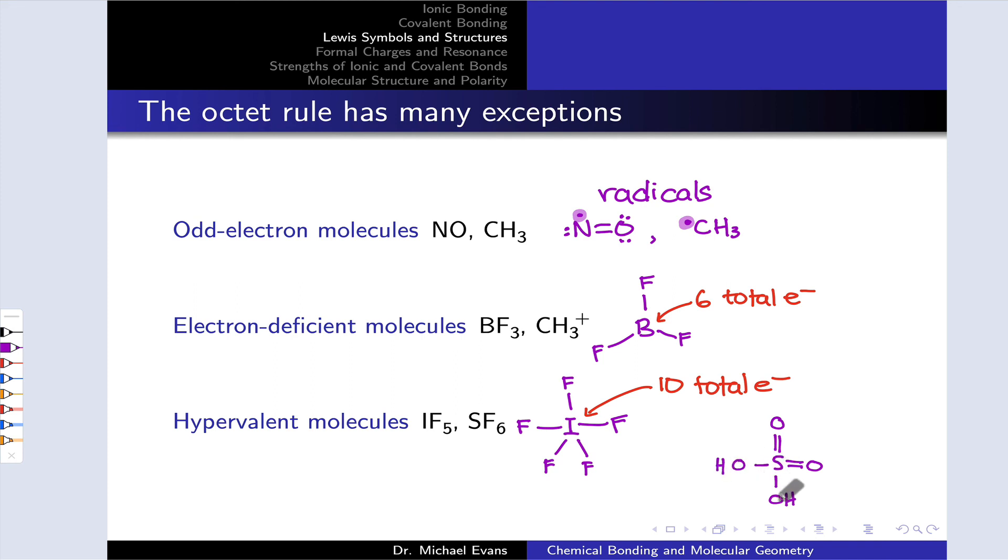If we look at that central sulfur atom, we have 2, 4, 6, 8, 10, 12 electrons around sulfur again. So these do come up particularly for elements in the third period of the periodic table in the P block: sulfur, phosphorus, halogens, heavy halogens, et cetera.